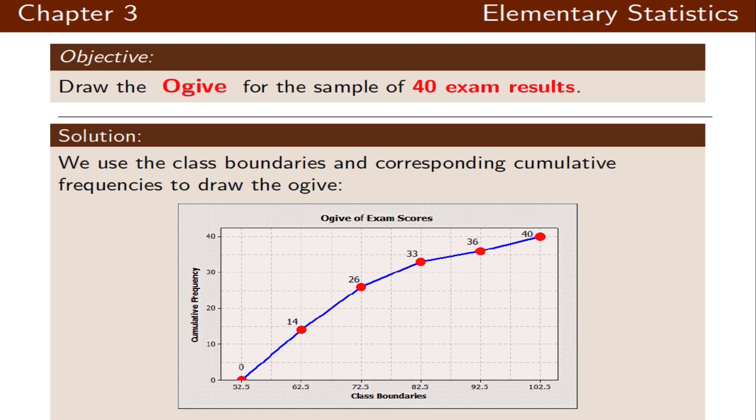The ogive graph is usually increasing unless you have a class with zero frequency, in which case there will be a horizontal line. The ogive graph is always closed on the left hand side and will be going always to the right.